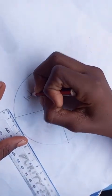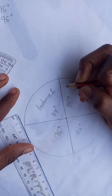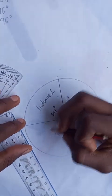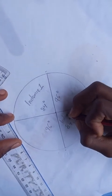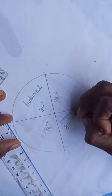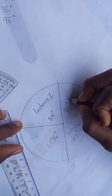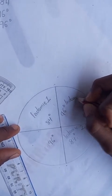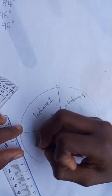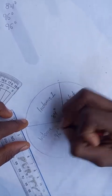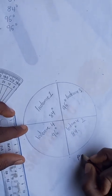And this is 84 degrees for Indomie 1. So Indomie 1 is 84 degrees, Indomie 2 is 96 degrees, Indomie 3 is 96 degrees, and Indomie 4 is 96 degrees. So this is a pie chart.